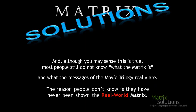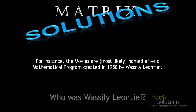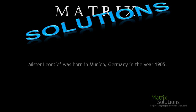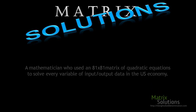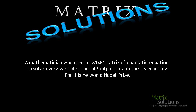The reason people don't know is that they've never been shown the real-world matrix. The movies are named after a mathematical program created in 1958 by Vasili Leontief. He was born in Munich, Germany in 1905 — a mathematician who used an 81 by 81 matrix of quadratic equations to solve for every variable of input-output data in the United States economy.